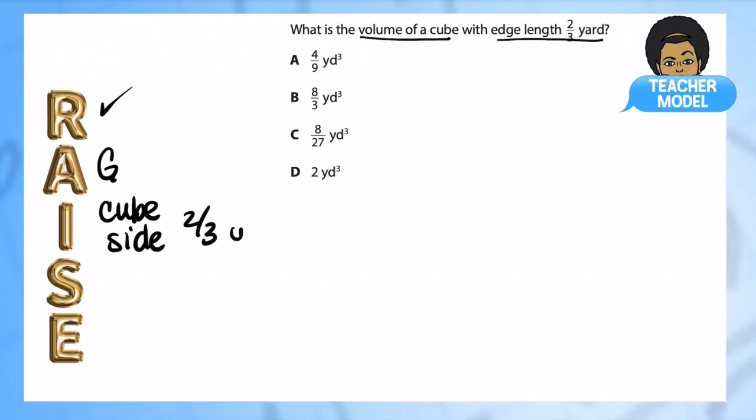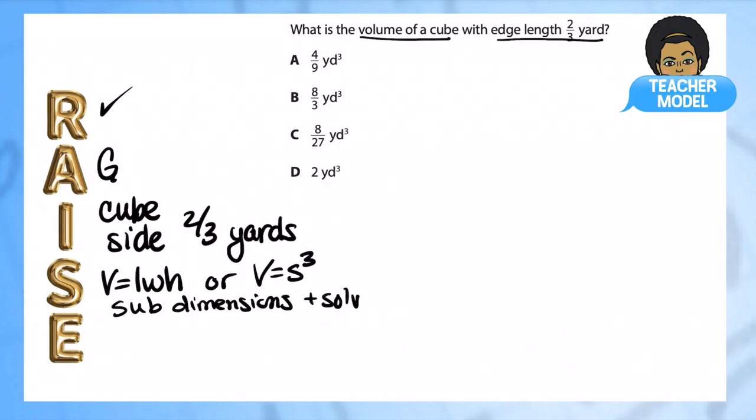Again, this is geometry. We have a cube and the side is two-thirds yards. Being that it's a cube, you can use either formula: volume equals length times width times height - you just know they're going to be the same - or you can do volume is equal to the side cubed. We're going to sub and solve. We're going to substitute our dimensions and solve.